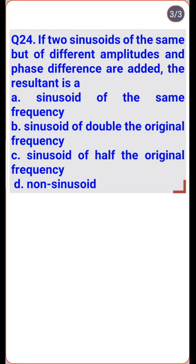If two sinusoids of the same frequency but of different amplitude and phase are added, the resultant is a sinusoid of the same frequency — so option A is the right one.